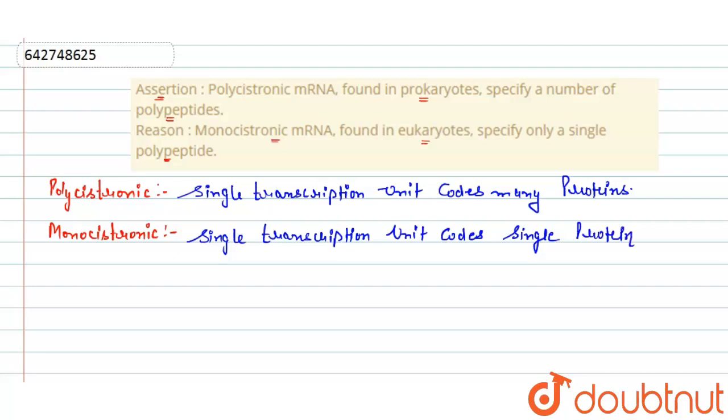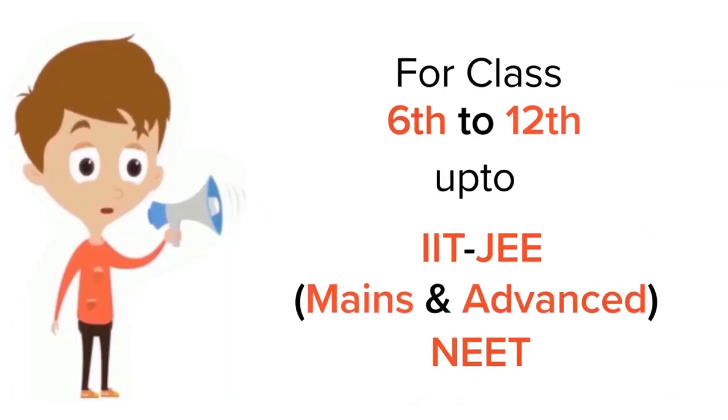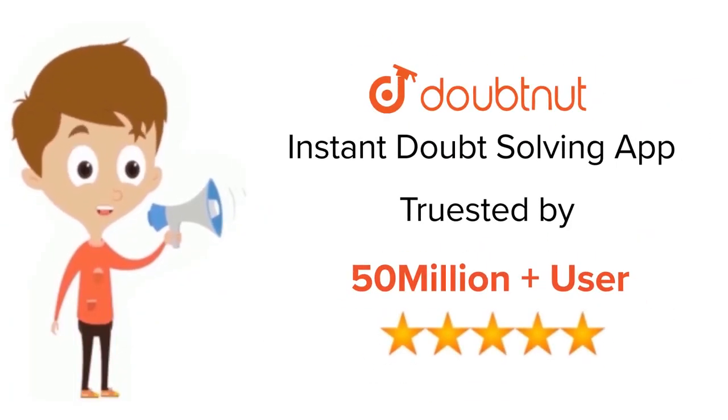So according to our definitions of polycistronic and monocistronic, assertion and reason both are correct. But the reason is not the correct explanation of the assertion.